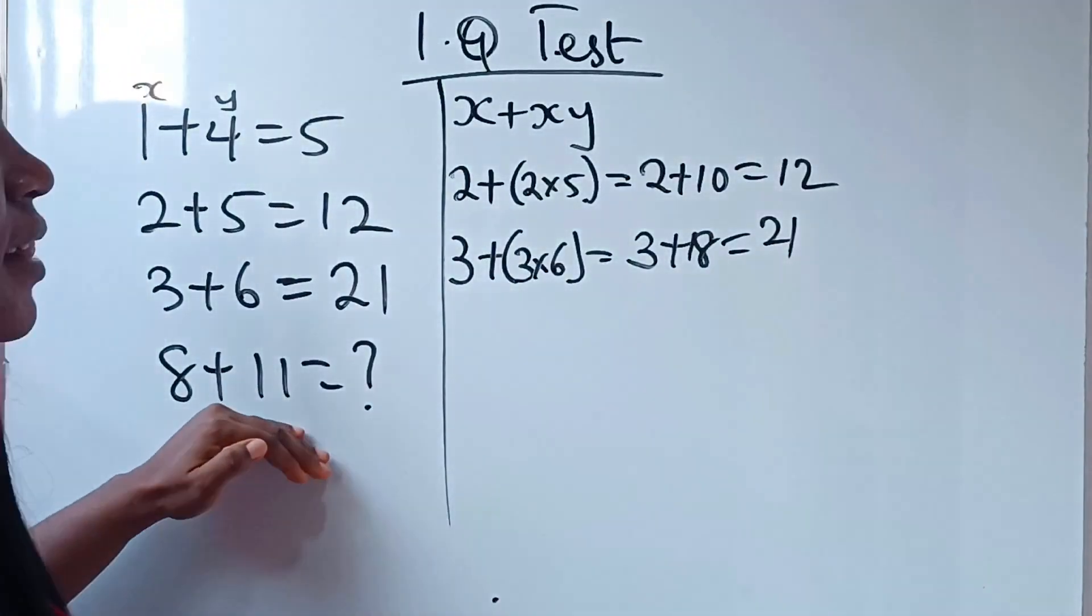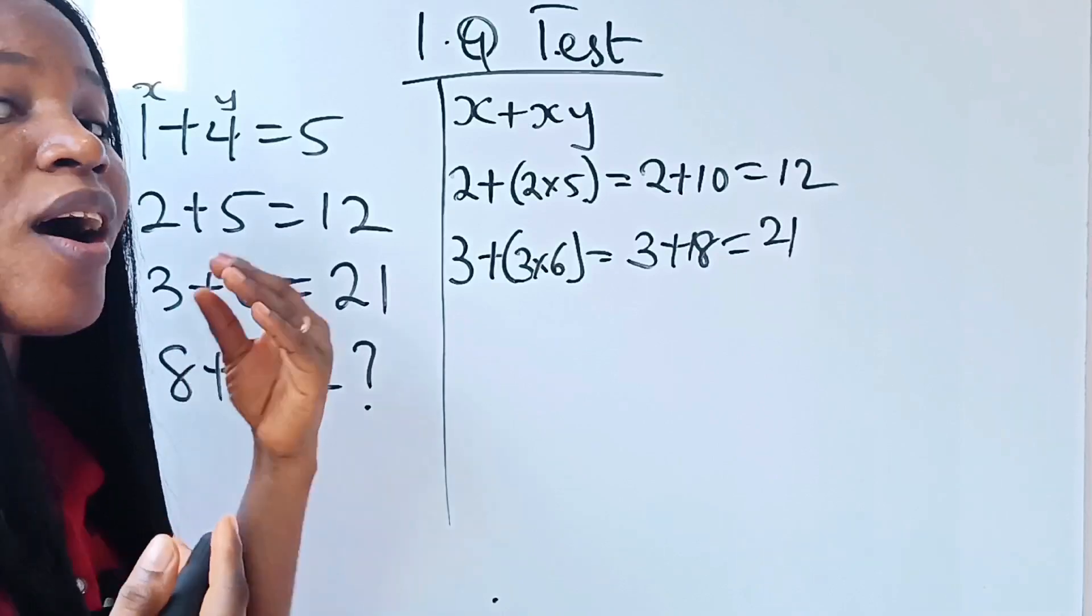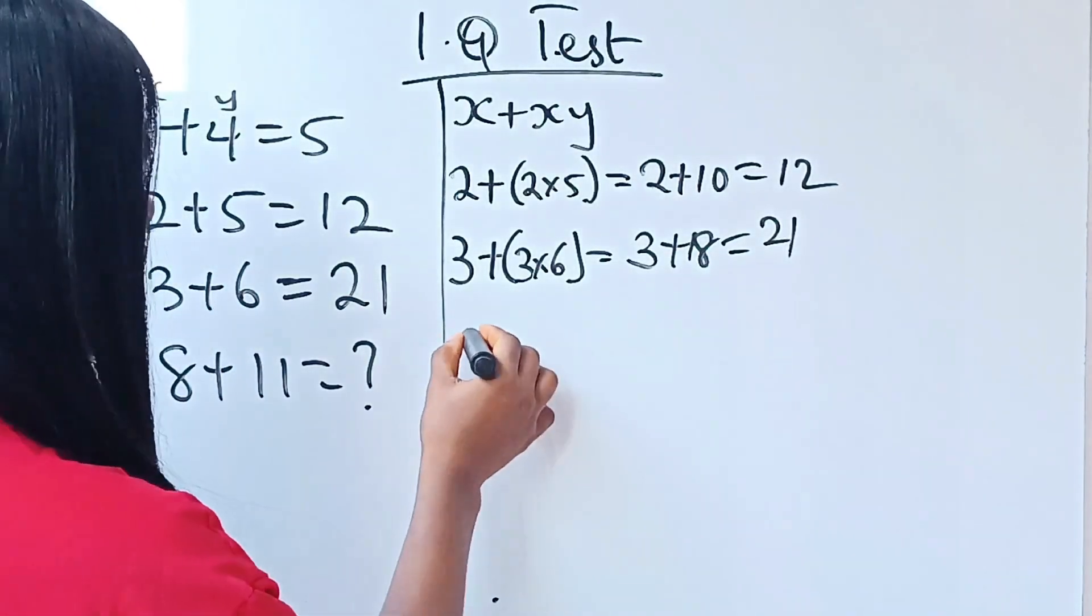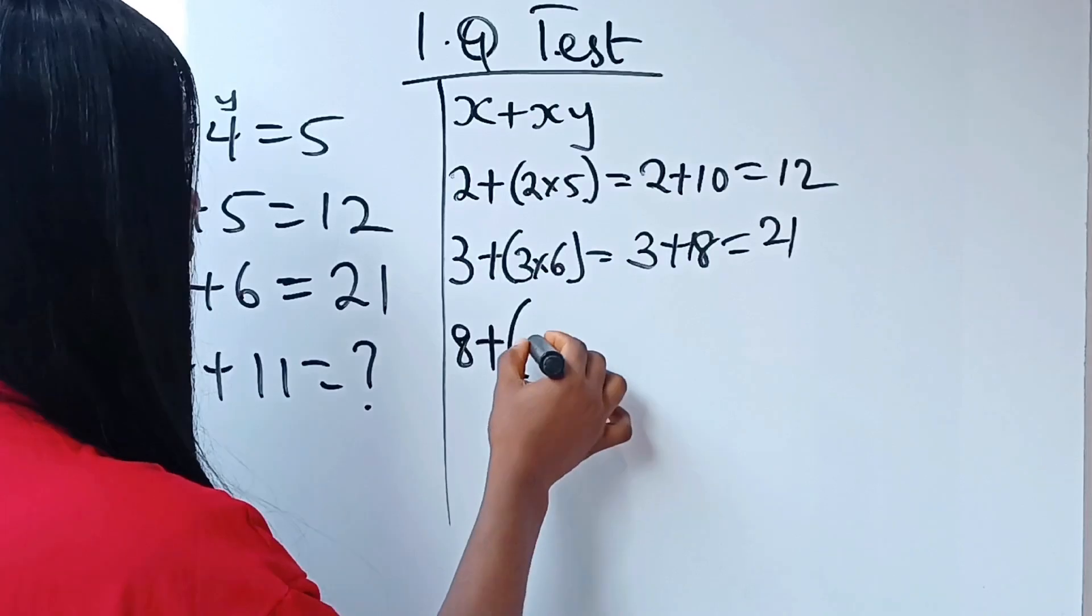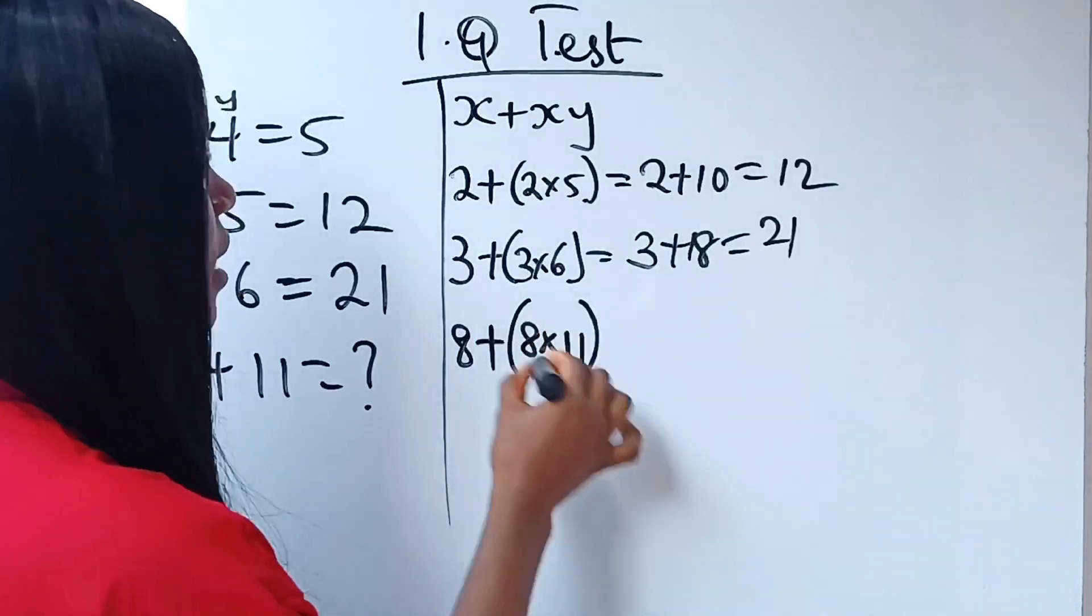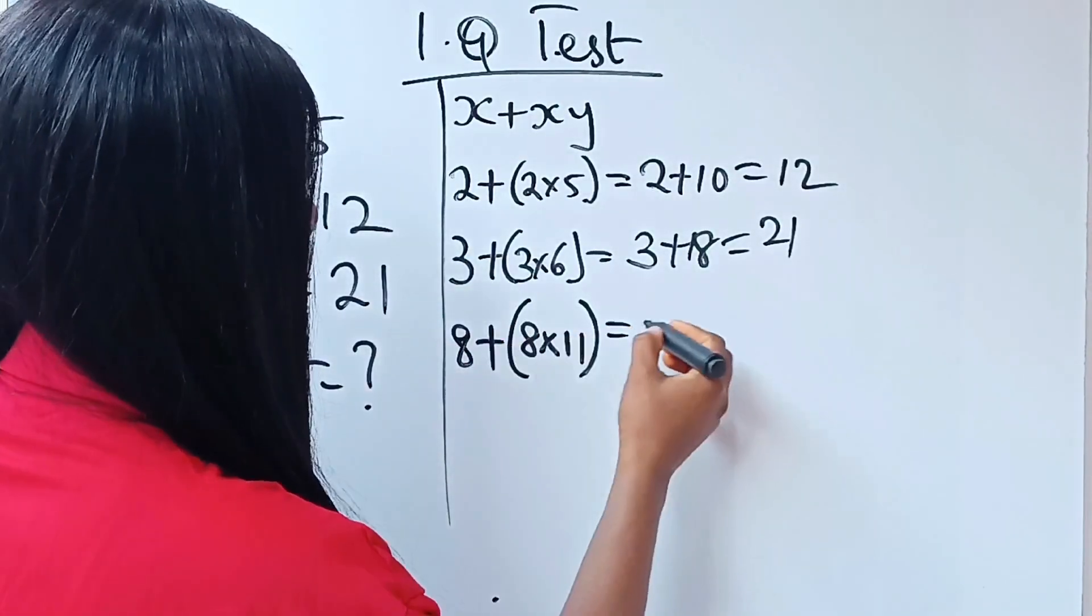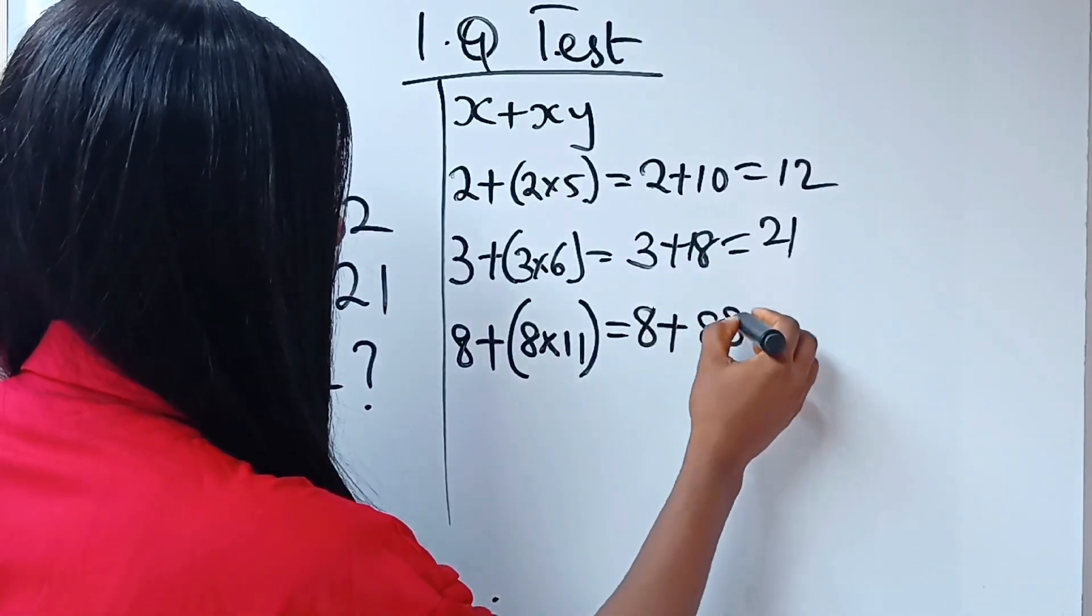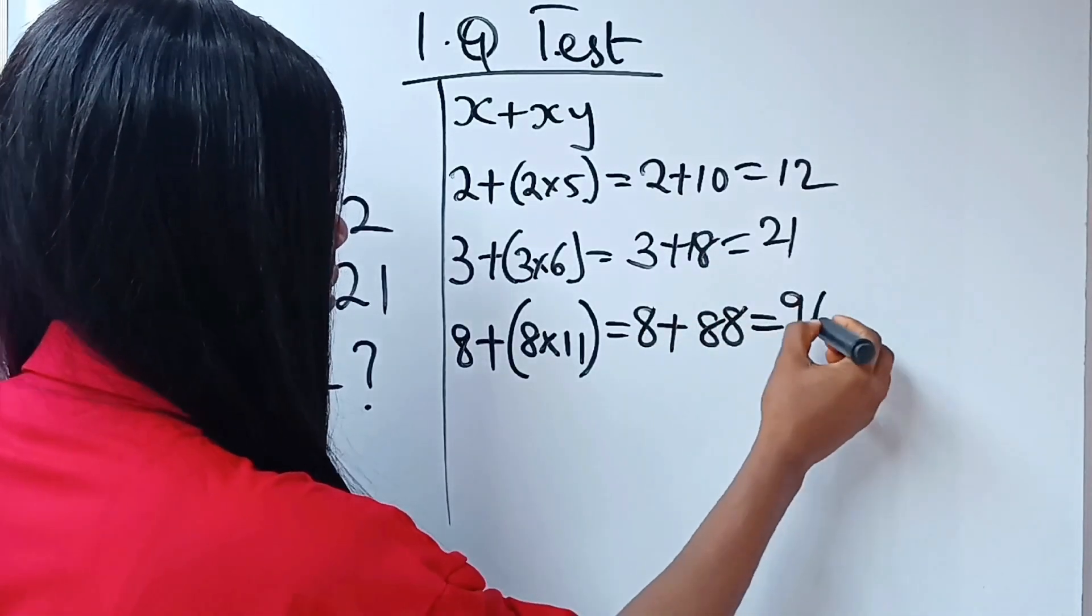And the last one then should be, according to them, 8 plus 8 times 11, okay? Which is equal to 8 plus 88, which is 96.